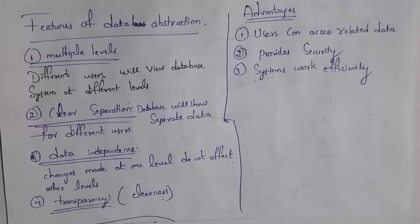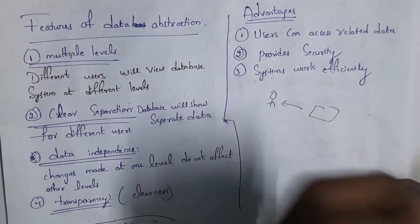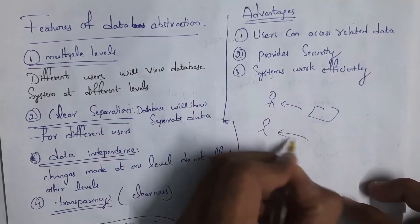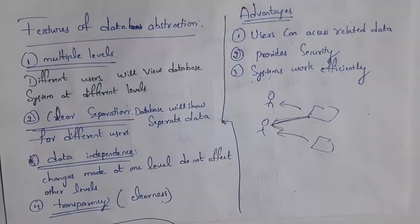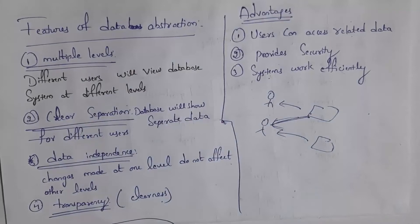Next, the advantages of data abstraction. First, it displays only related data. Second, it provides security — for example, the database displays only student information to students and only faculty information to faculty, so data is secure. Third, the system works efficiently — in the database we store only related information, so it does not occupy much memory and the system performs well.